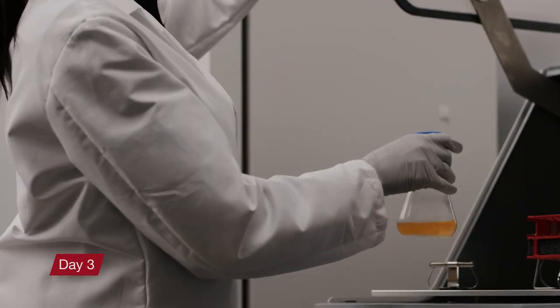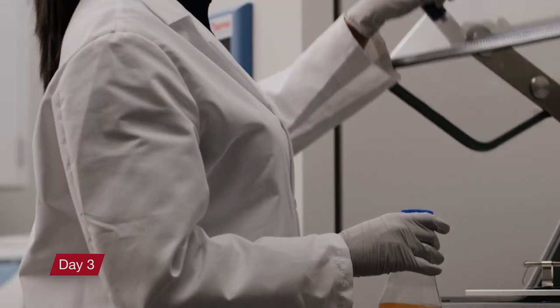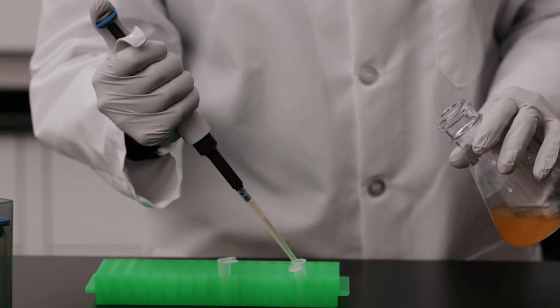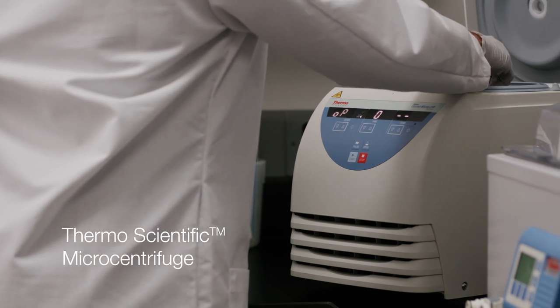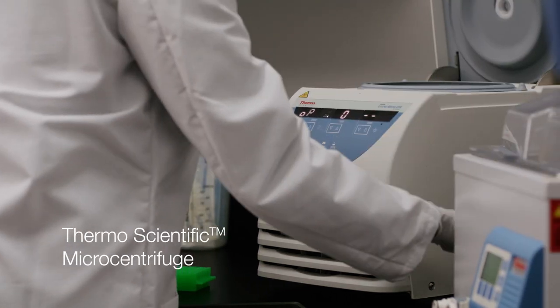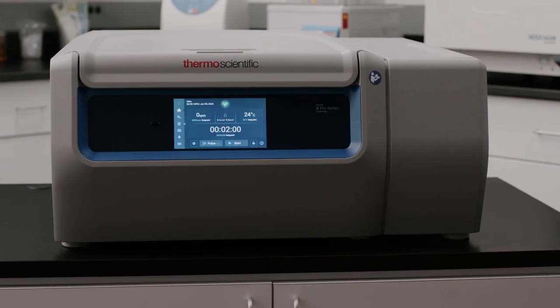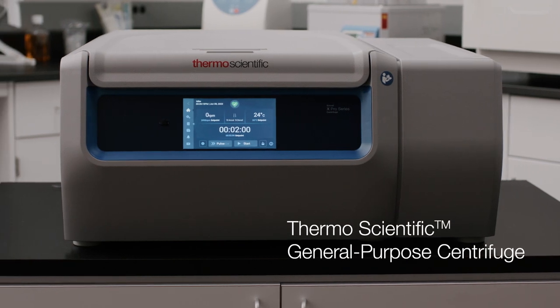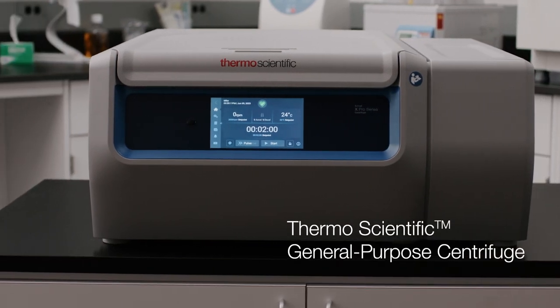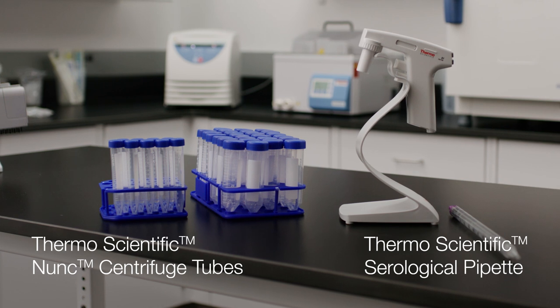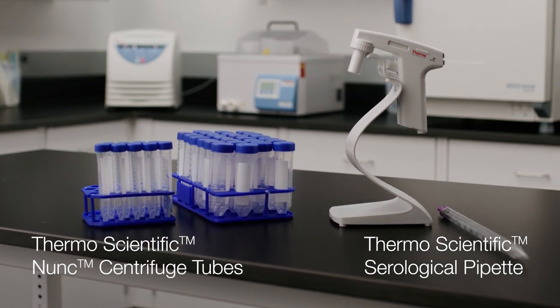The following day, Maria begins her DNA mini prep using small-volume ThermoScientific microcentrifuge SnapCap tubes and an F1 ClipTip pipette and tips. If she was developing a maxi-prep, she would have used a ThermoScientific general-purpose centrifuge with ThermoScientific Nunc centrifuge tubes and ThermoScientific serological pipettes with filters.